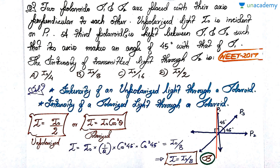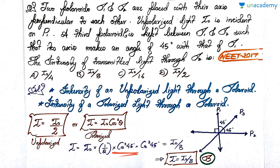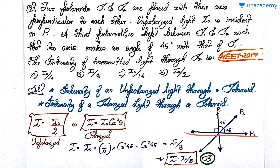P1 and P2 have perpendicular axes, and P3 is placed at 45° between them. Light incident on P1 becomes half (I₀/2) since it was unpolarized. Now polarized, it passes through P3 at 45°, so multiply by cos²45° = 1/2. This new polarized light then encounters P2, also at 45° to P3's polarization axis, so multiply by cos²45° again. Substituting: I₀ × (1/2) × (1/2) × (1/2) = I₀/8. The correct answer is option B.